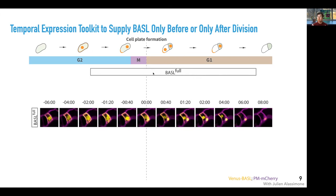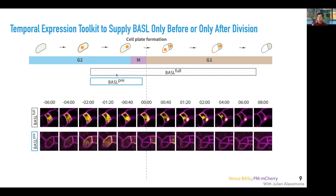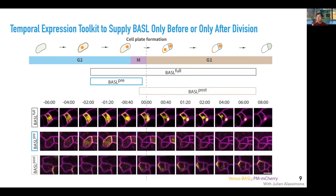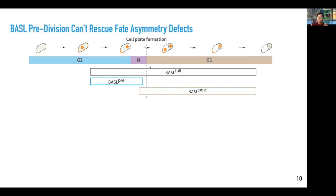To answer this question, in collaboration with postdoc Julian, we generated a set of basal expression toolbox constructs which allow us to express basal in different phases of the normal expression window of the asymmetric cell division. For example, we can express basal in the full-length window where they polarize before asymmetric cell division and stay polarized afterwards. Additionally, we can restrict the basal expression window to only before asymmetric cell division, where the protein is degraded after division. Lastly, we can express basal only after asymmetric cell division, where we see them polarize and then stay polarized as long as the basal construct persists.